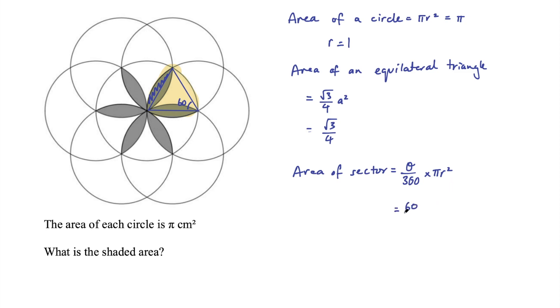The angle in this case is 60, so it's 60/360 multiplied by π times r². r is one, so it's just π, and 60/360 is one-sixth, so I could write this as π/6.